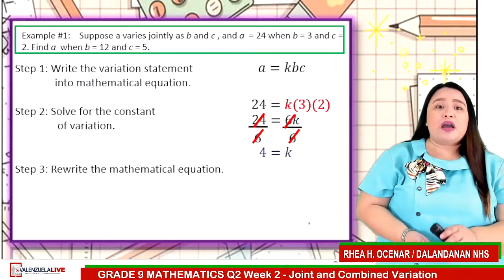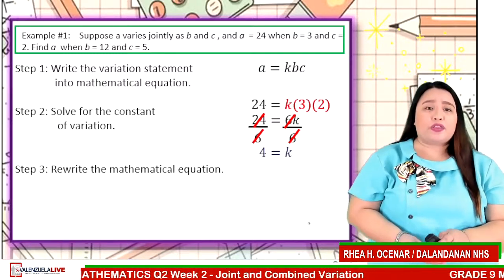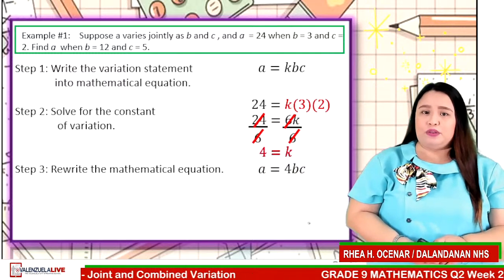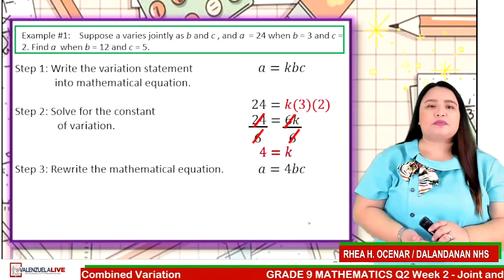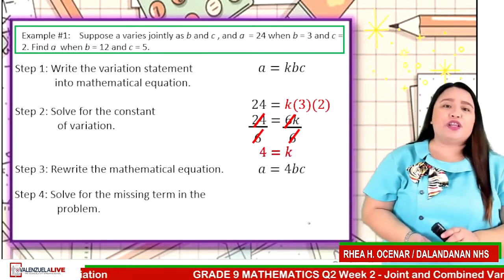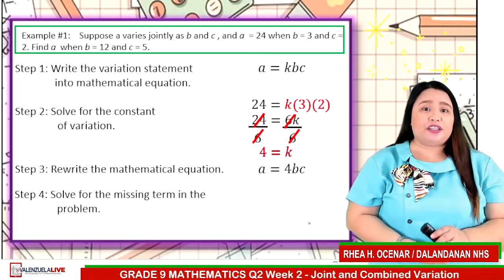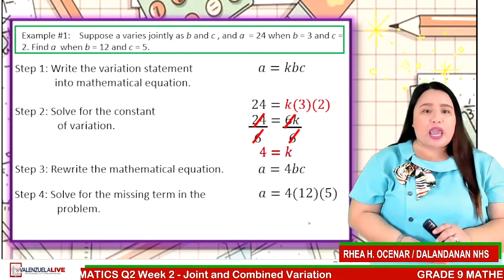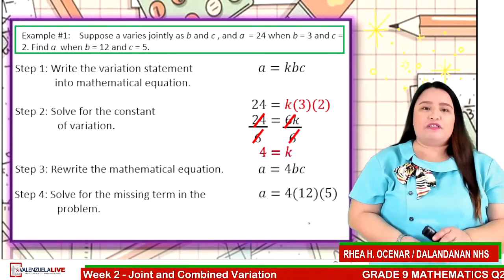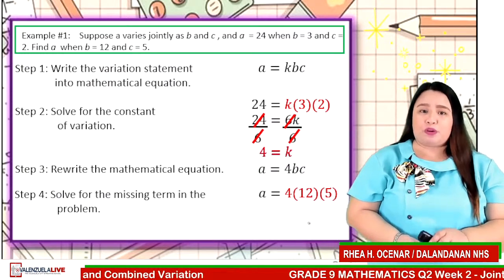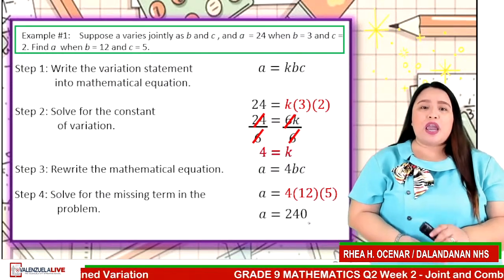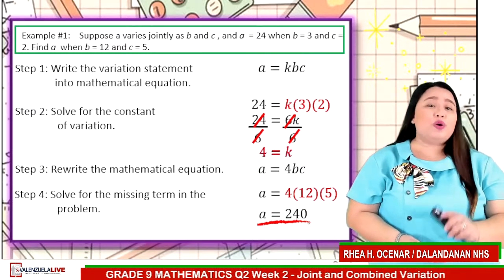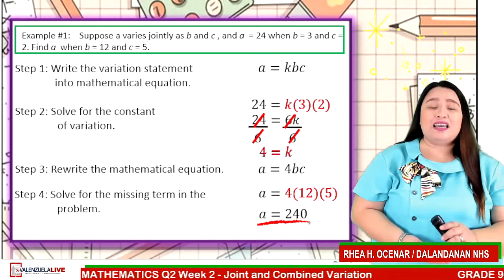Step three: rewrite the mathematical equation by putting the constant term k is equal to 4. So we have A is equal to 4BC. Step four: solve for the missing term in the problem. Since we need to find the value of A when B is 12 and C is 5, we have A is equal to 4 times 12 times 5. Simplifying, we have A is equal to 240. Therefore, A is 240 when B is 12 and C is 5.